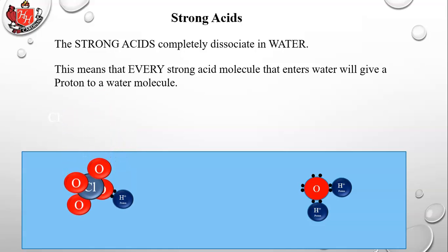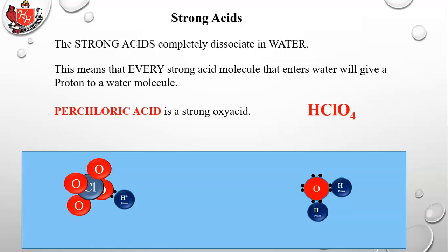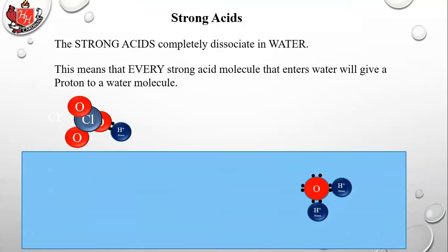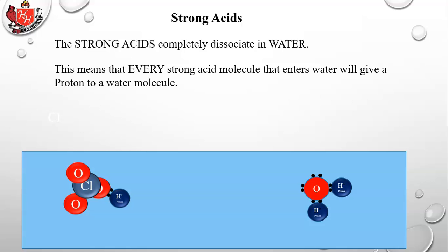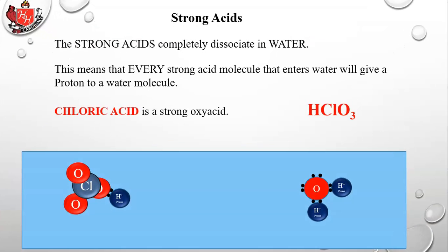Perchloric acid dissociates in the same way — all molecules dissociate. Finally, chloric acid, which some books don't consider a strong acid, will also dissociate and form hydronium ions. Remember: the definition of an acid is that it forms H3O+ hydronium ions in a water solution.